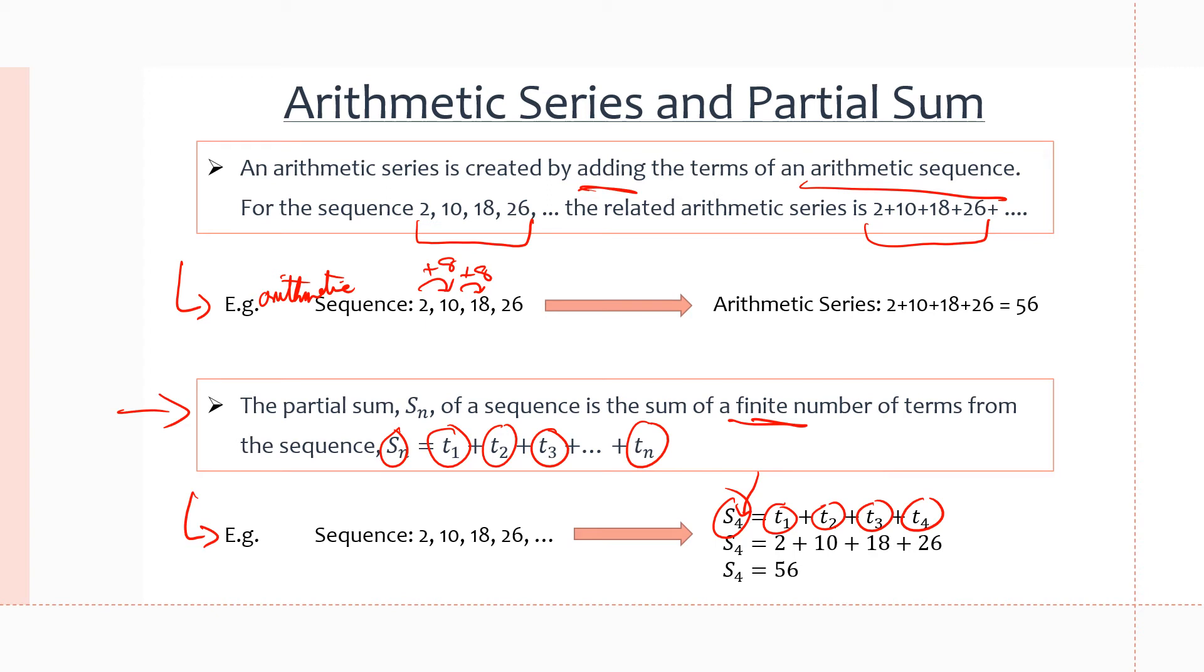So the first four terms are the ones that are shown right here. So we just plug them in, 2 plus 10 plus 18 plus 26. If you add those up, we'll get 56. And so S4 equals 56. The partial sum to the nth term, when n equals 4, is 56 for this particular arithmetic sequence.